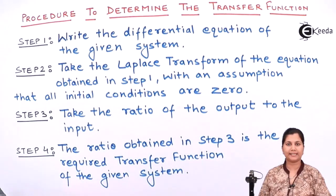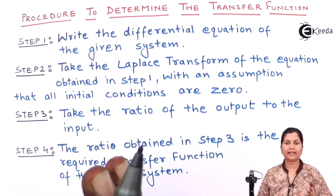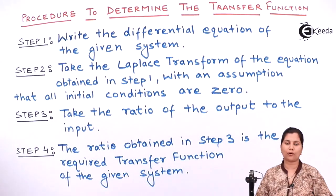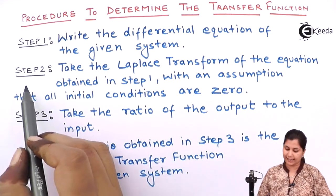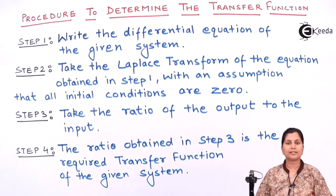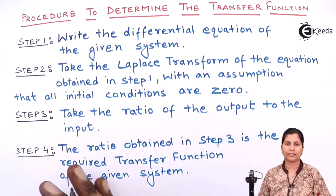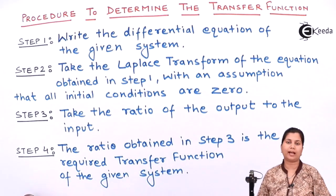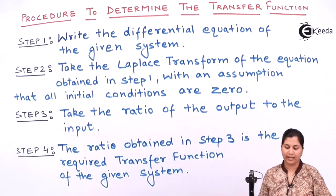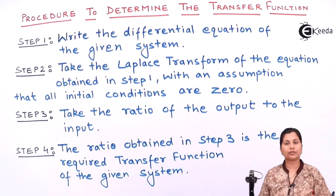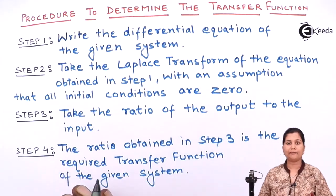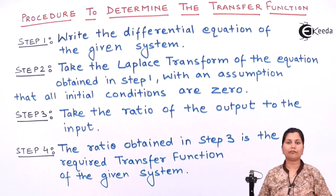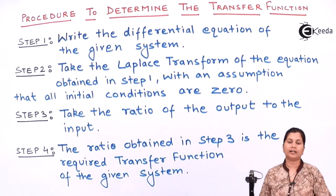Let's summarize these steps. In the first step, write the differential equation of the system. In the second step, take the Laplace transform of the equation and assume that all initial conditions are zero. In step three, take the ratio of the output to the input, and in step four, the ratio obtained will be the required transfer function of the given system.